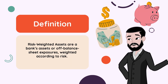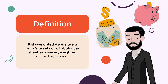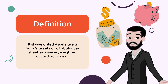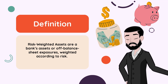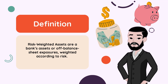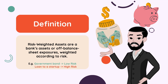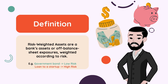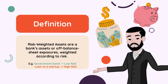Risk-weighted assets are a bank's assets or off-balance sheet exposures, weighted according to risk. This weighting is used to determine the minimum amount of capital that a bank must hold to reduce the risk of insolvency. In simpler terms, not all assets are equally risky. RWAs are a way to measure that risk and ensure banks have enough capital to cover potential losses. For example, a government bond might be considered low-risk, while a loan to a startup might be high-risk. By assigning different weights to different assets, banks can better prepare for potential losses.